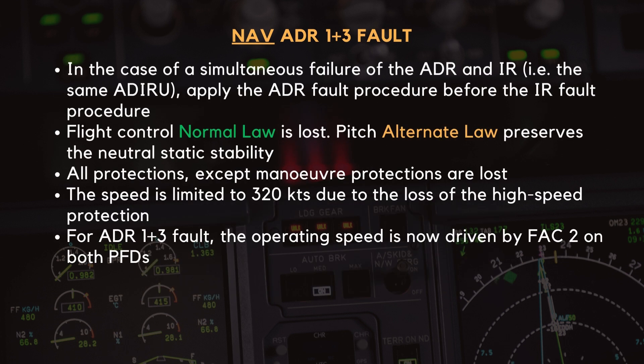In the case of a simultaneous failure of the ADR and IR, apply the ADR fault procedure before the IR fault procedure. Flight control normal law is lost. Pitch alternate law preserves the neutral static stability. All protections, except maneuver protections, are lost. The speed is limited to 320 knots due to the loss of the high-speed protection. For ADR 1 plus 3 fault, the operating speed is now driven by FAC 2 on both PFDs.